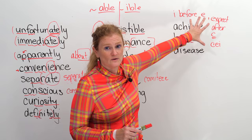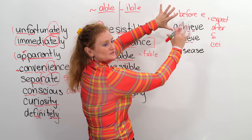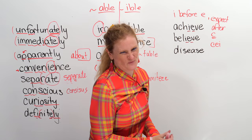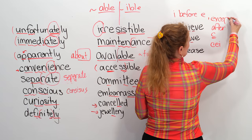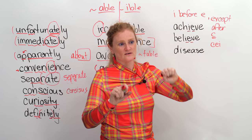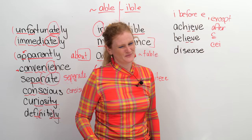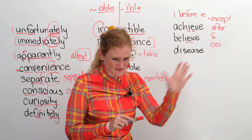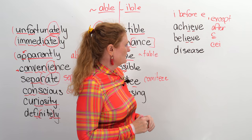Just be careful. I would make a little chart and put all the words that fit this rule, and then the rebels — the ones who say 'I'm not following this I before E rule.' Put them in a different category. Achieve, believe — these guys follow the rule.